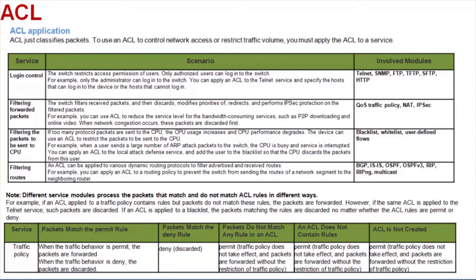Now I'll show you how the traffic policy module processes packets. If a packet matches the permit rule in an ACL, whether the packet is forwarded or discarded depends on the traffic policy configuration. If the traffic behavior in the traffic policy is permitted, the packet is forwarded. If the traffic behavior is denied, the packet is discarded. If a packet matches the deny rule in an ACL, the packet is discarded. If a packet does not match any ACL rule, the packet is forwarded without being affected by an ACL.